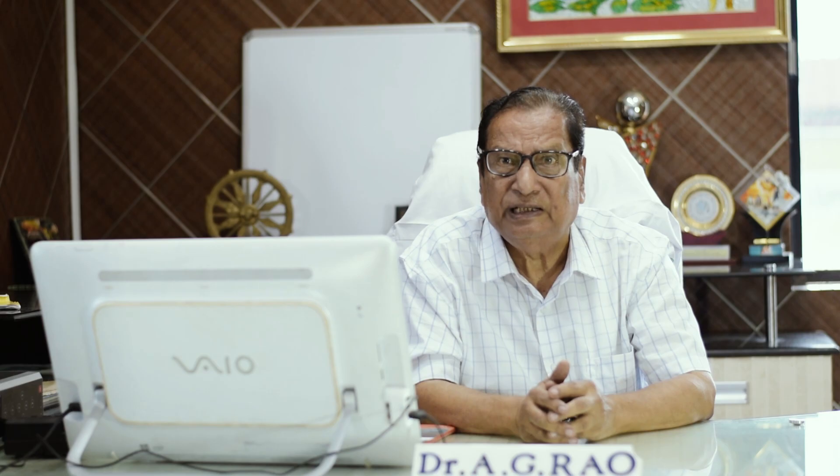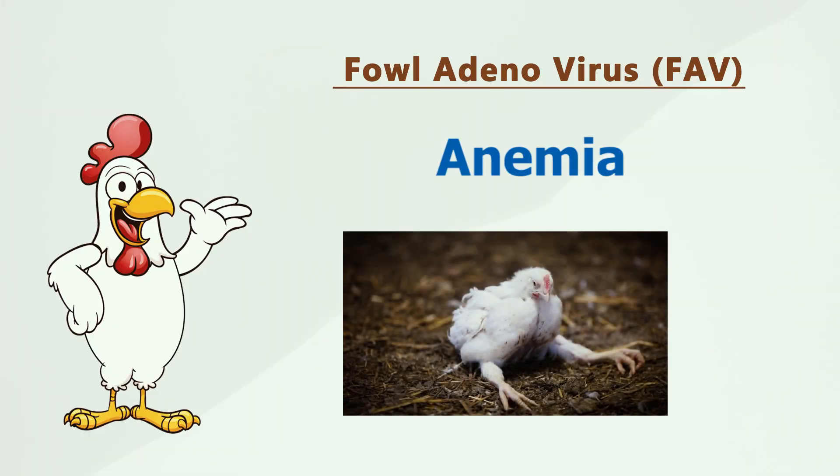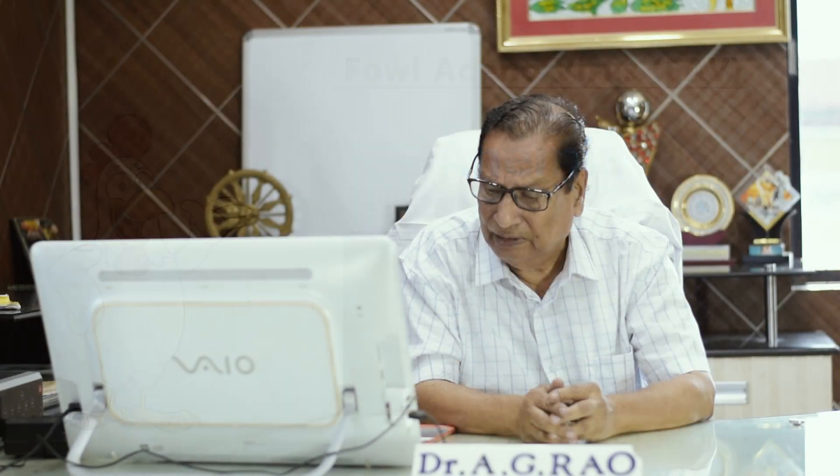Another important lesion is anemia — body paleness, where the body will appear very pale. There is also jaundice, with yellow discoloration of the fat and subcutaneous tissue.